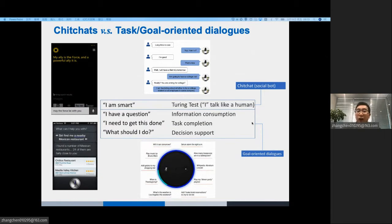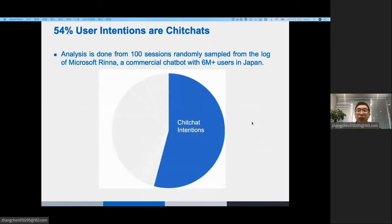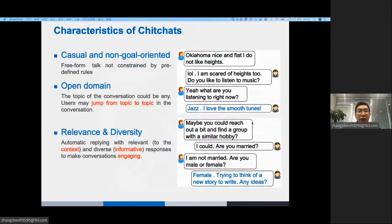On the other hand, task-oriented dialogues are used to aid people to complete some tasks. Here is the statistics. More than half of user's intentions are chit-chats. That is, people are more willing to talk with robots.